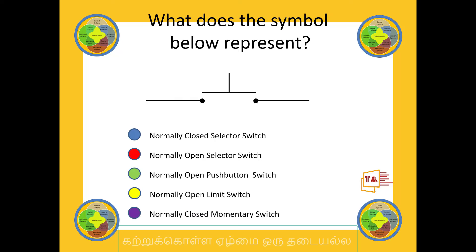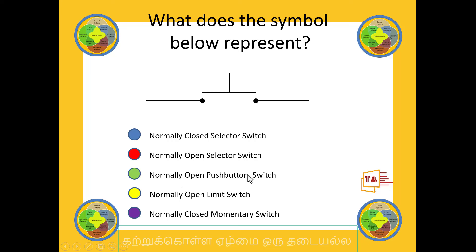First, what does the symbol below represent? If we look at this, it's normally closed. What do we see here? It's open — there are options: normally closed or open, push button or limit switch, normally closed momentary switch. If we see what is shown here, this is a push button. This is normally open — that means a normally open push button switch.